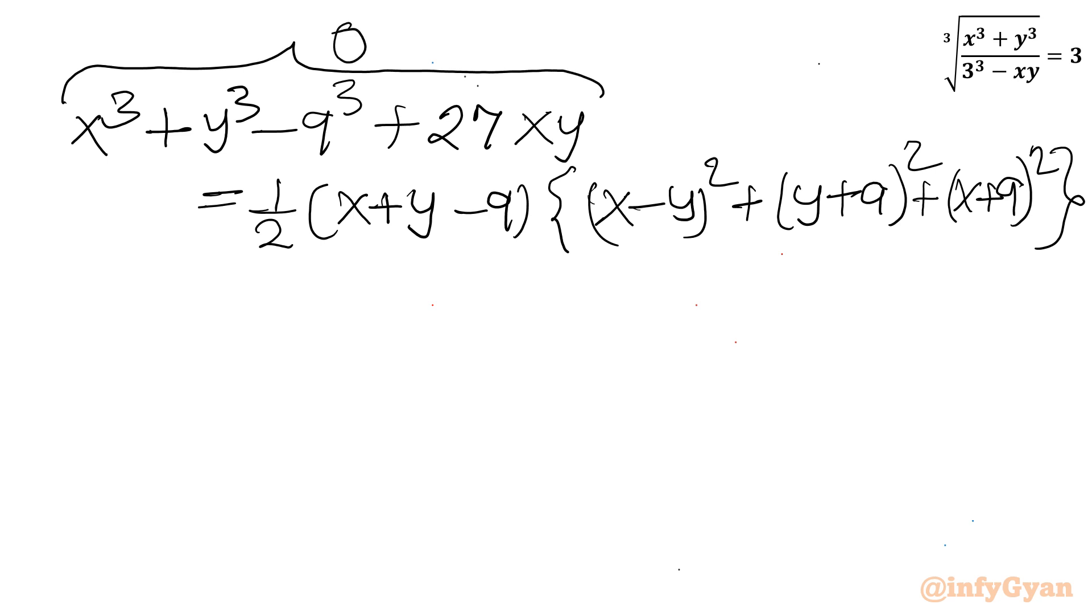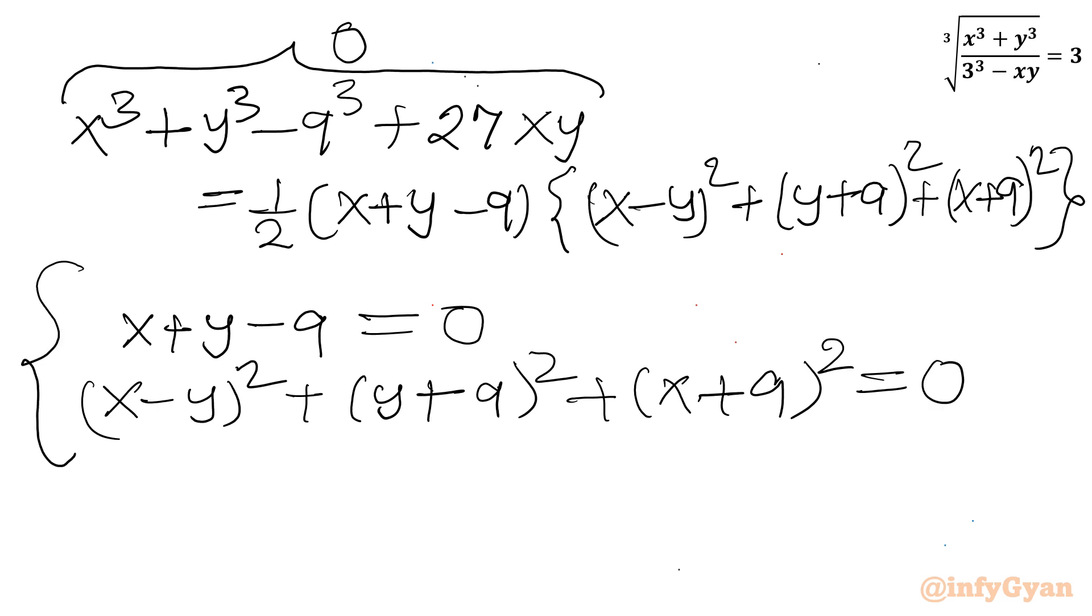So conclusion would be either x plus y minus 9 will be 0 or x minus y whole square plus y minus 9 whole square plus x plus 9 whole square equal to 0. Now we have to solve these two equations. So from first equation let us consider first equation. So I can write x plus y equal to 9.